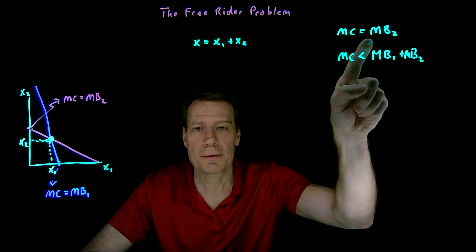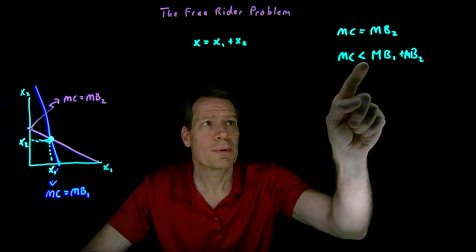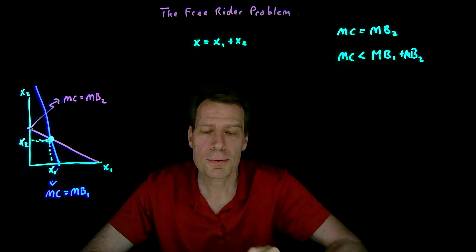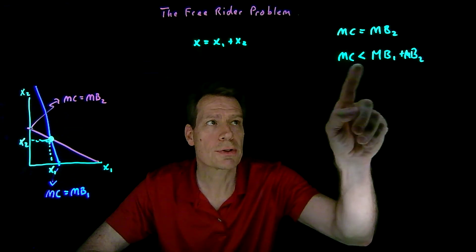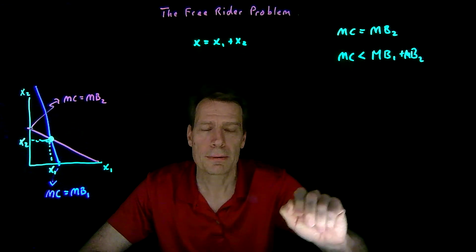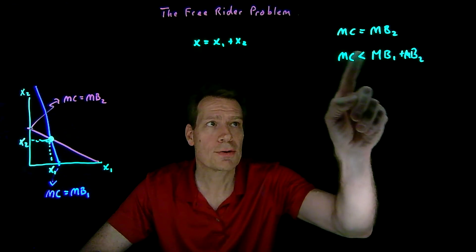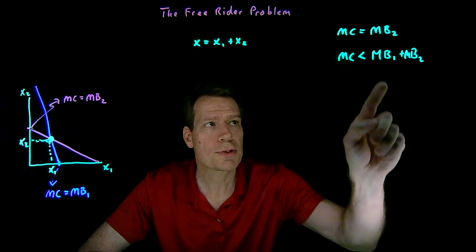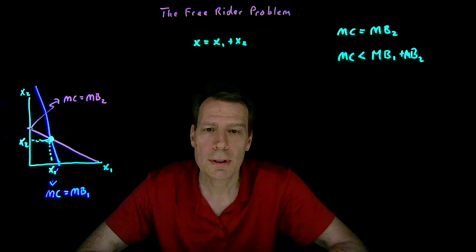If I'm buying until my marginal cost equals my marginal benefit, then if we add your marginal benefit to the equation, the sum of our marginal benefits must be larger than the marginal cost. In other words, we're not going to produce the efficient level of the public good. The efficient level would occur where the marginal cost equals the sum of our benefits. We're buying too few fireworks. As we bought more, marginal benefits would fall until we'd reach equality and the efficient quantity — but we're stopping short of that. So we're under-providing the public good when we try to do it on our own.